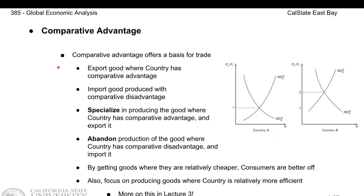Obviously, if the U.S. is more efficient in making iPhones, then it makes sense and it's convenient for the rest of the world, including Norway, to purchase iPhones from the U.S. As a result, the U.S. would need to start making more iPhones to satisfy this international demand. This idea is known as specialization — countries after trade are going to specialize in producing the goods they're better at or more efficient at.